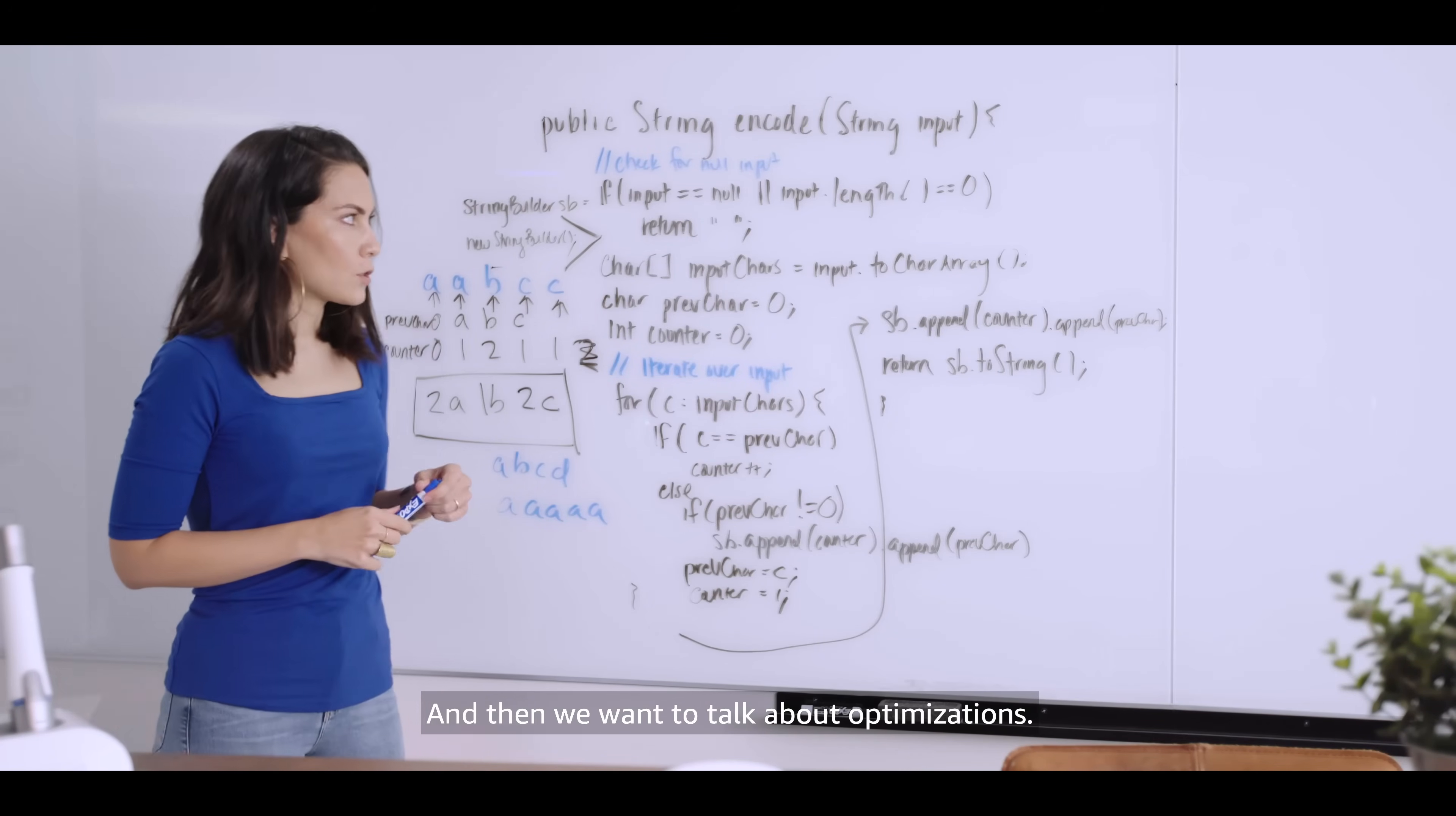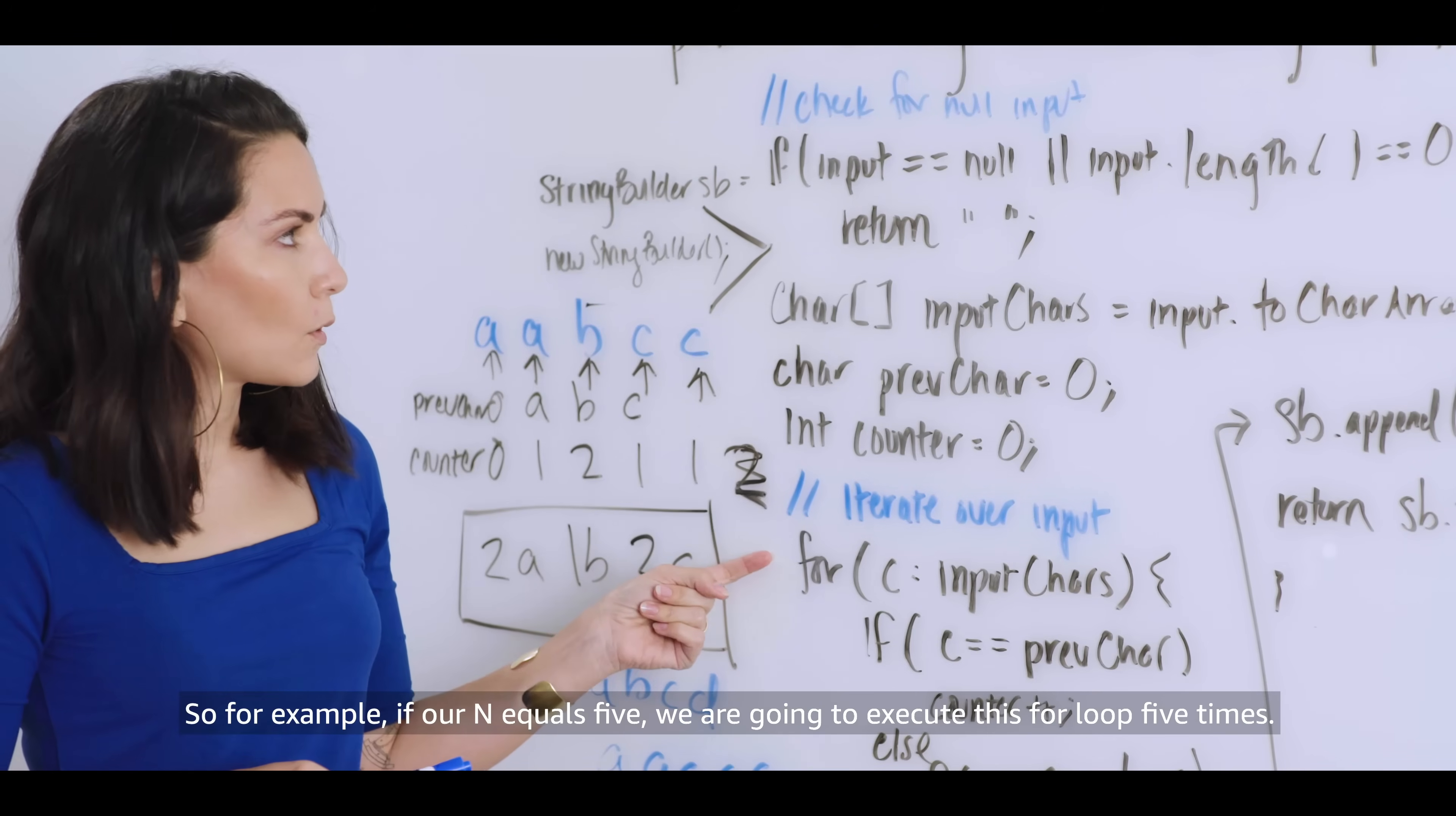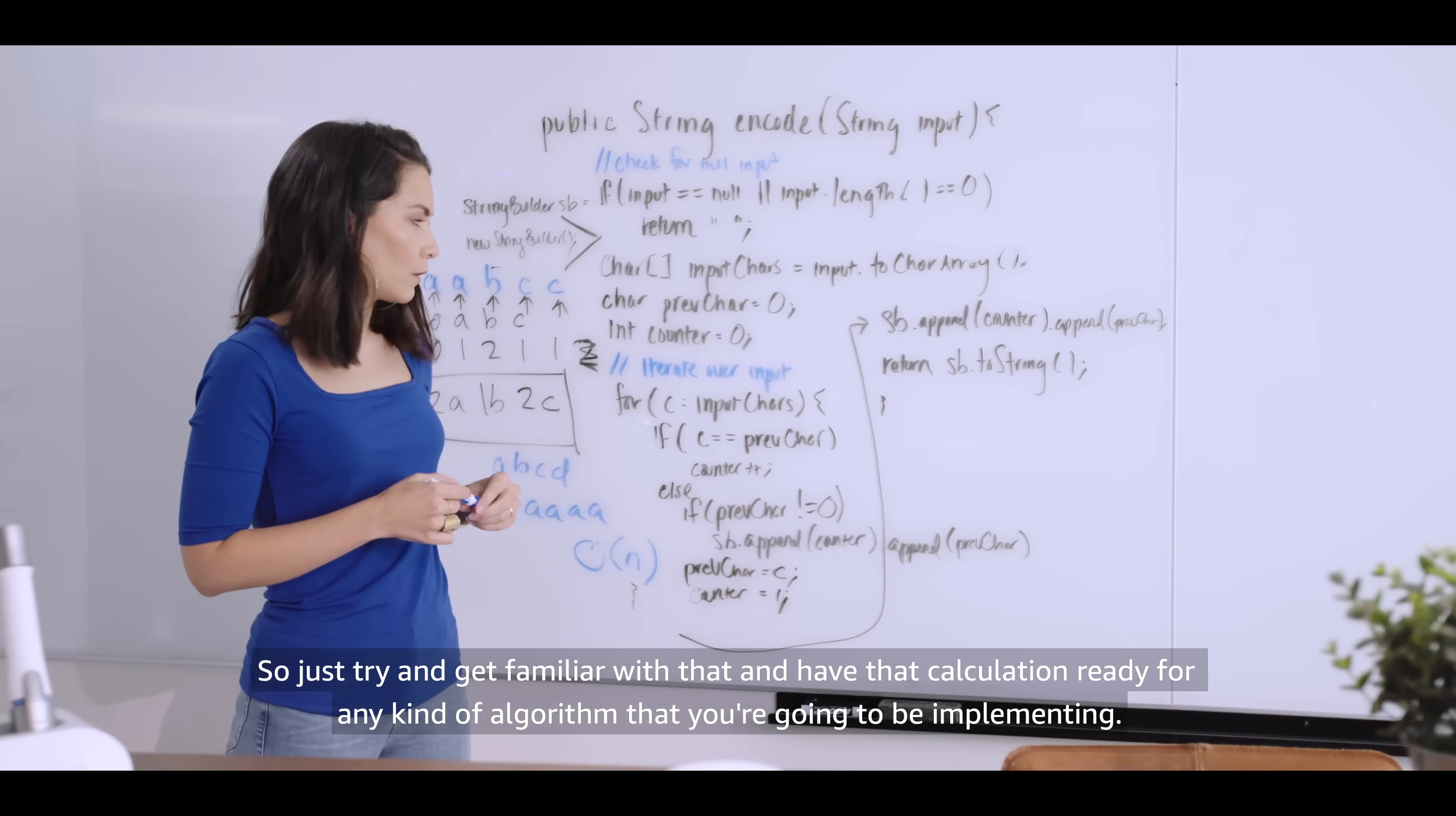And then we want to talk about optimizations. It's really good to be familiar with how you compute time and space complexity. Let's go over time complexity real quickly. So we know that in this case with our string input, we are going to walk through every character in the input one time. So for example, if our n equals five, we are going to execute this for loop five times. So our time complexity is going to be O of n. So just try and get familiar with that and have that calculation ready for any kind of algorithm that you're going to be implementing.